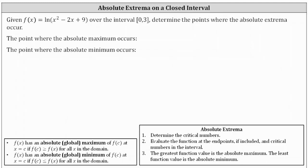We're given f(x) equals the natural log of the quantity x squared minus two x plus nine over the closed interval from zero to three, and we're asked to determine the points where the absolute extrema occur. The first step is to determine the critical points that are in the closed interval from zero to three. This will give us the possible locations of any relative extrema that may end up being an absolute maximum or an absolute minimum.